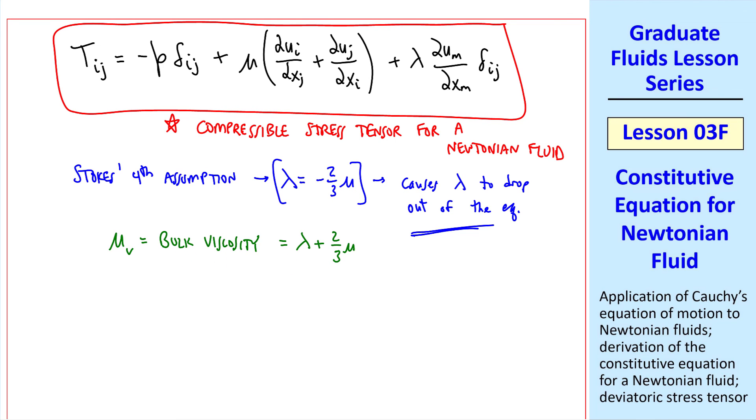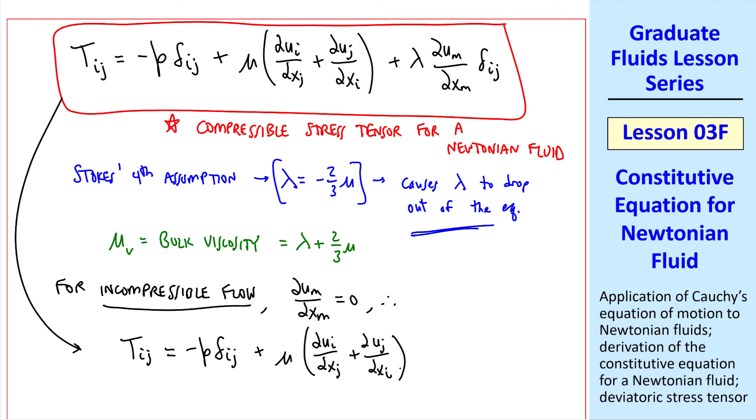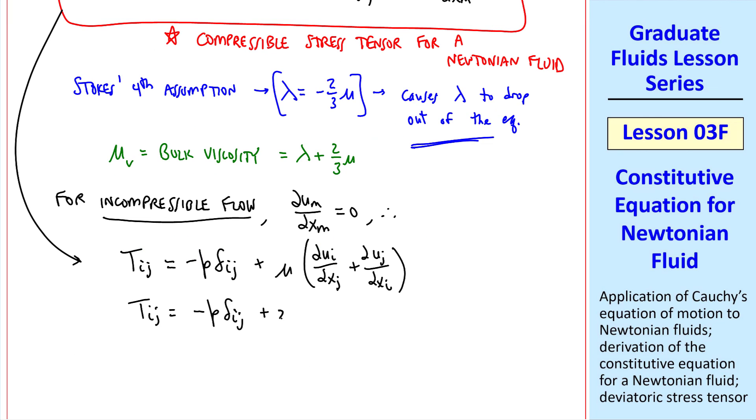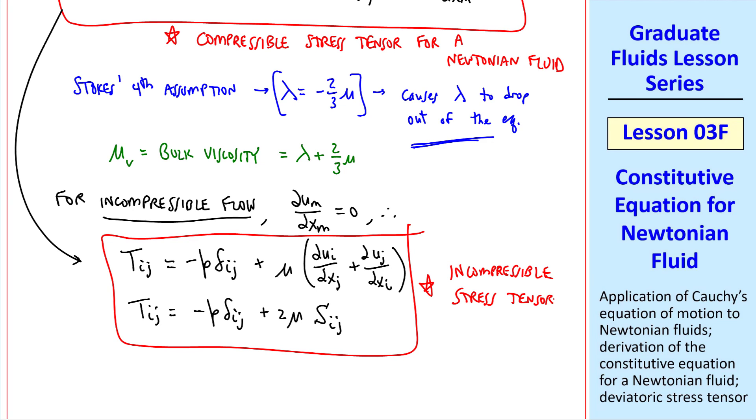Most of our work will be incompressible. For incompressible flow, del u m del xm equals zero. Therefore, this equation becomes tij equal negative p delta ij plus mu del ui del xj plus del uj del xi, or plus two mu sij. This is the incompressible stress tensor for Newtonian fluids. This is the form we'll use most often, and we have achieved our goal of obtaining a constitutive equation.